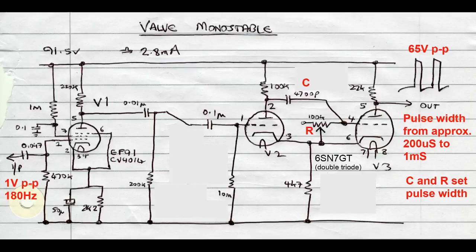Note the EF91 valve to the left converts a relatively small signal from the signal generator to a large enough voltage to trigger the monostable.